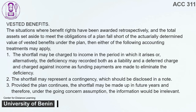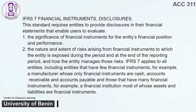3. Provided the plan continues, the shortfall may be made up in future years and therefore, under the going concern assumption, the information would be irrelevant. IFRS 7 — Financial Instruments Disclosures. This standard requires entities to provide disclosures in their financial statements that enable users to evaluate: 1. The significance of financial instruments for the entity's financial position and performance. 2. The nature and extent of risks arising from financial instruments to which the entity is exposed during the period and at the end of the reporting period, and how the entity manages those risks.